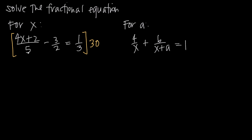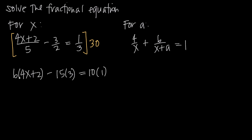So 30 times (4x plus 2) over 5: with 30 in the numerator and 5 in the denominator, that reduces to 6 over 1, so we're multiplying the numerator by 6, giving us 6 times (4x plus 2). Multiplying 30 by negative 3 over 2: 30 over 2 is 15, so we get minus 15 times 3. Then 30 times 1 over 3: 30 over 3 is 10, so we get 10 times 1.